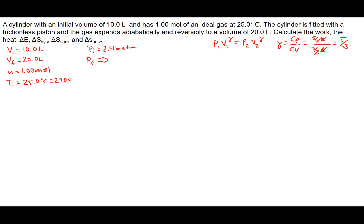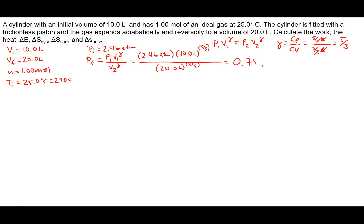For the final pressure, Pf = P₁V₁^γ / V₂^γ. Plugging in the values: 2.46 atmospheres times (10.0 liters)^(5/3) over (20.0 liters)^(5/3). Calculating that out, we get that the final pressure is 0.775 atmospheres.